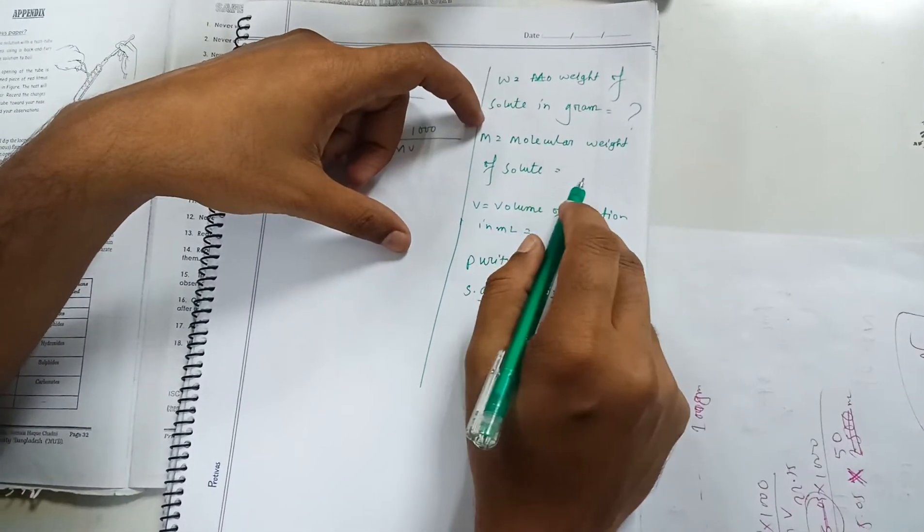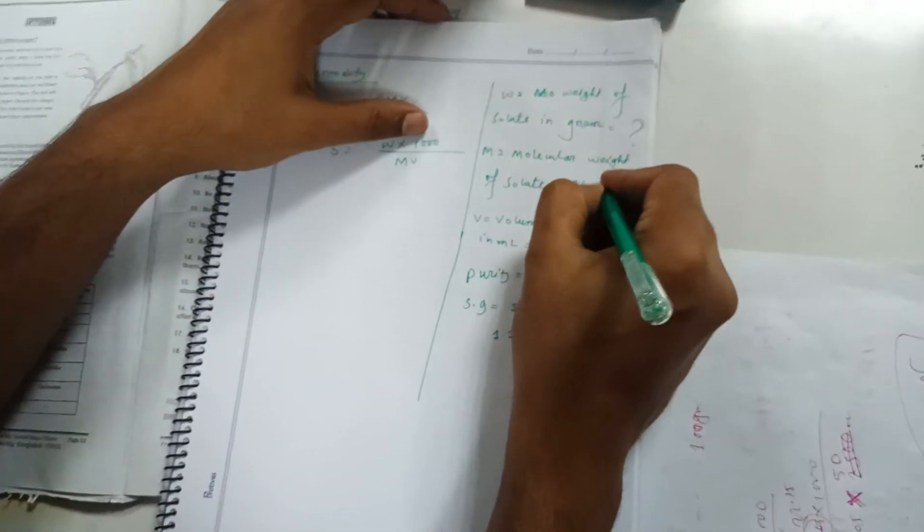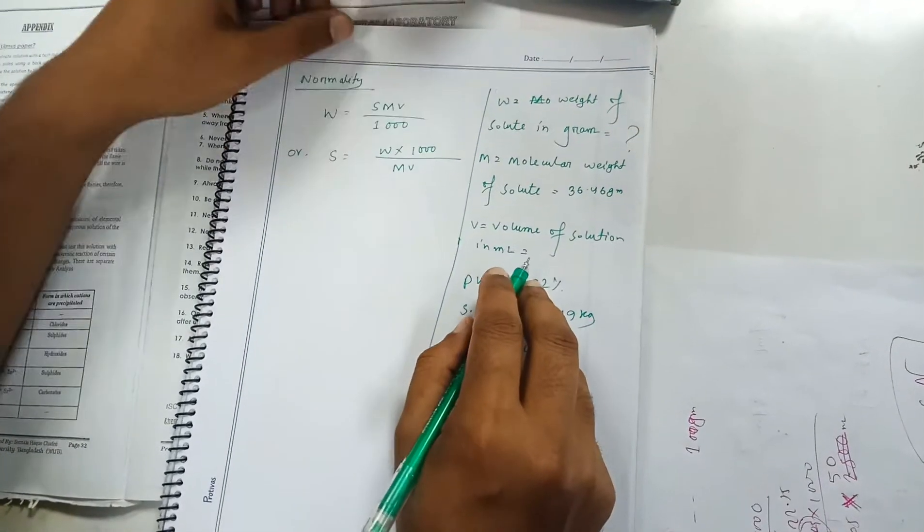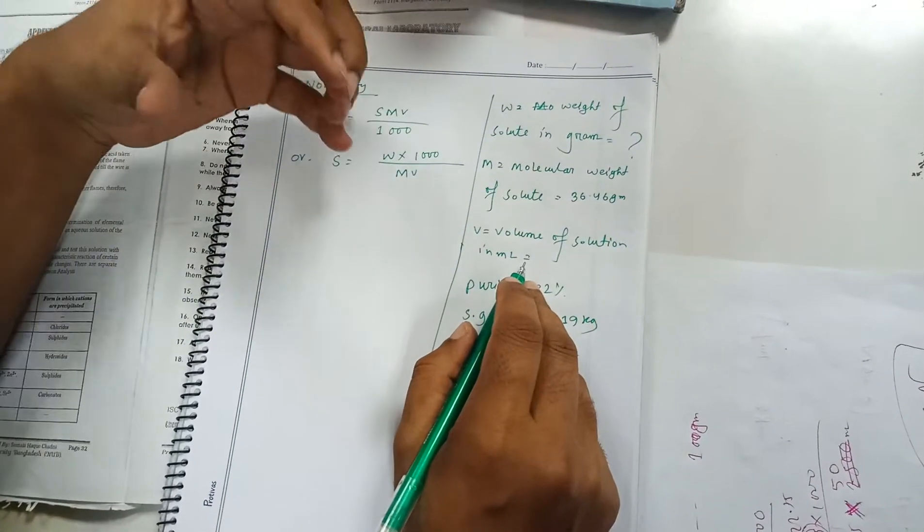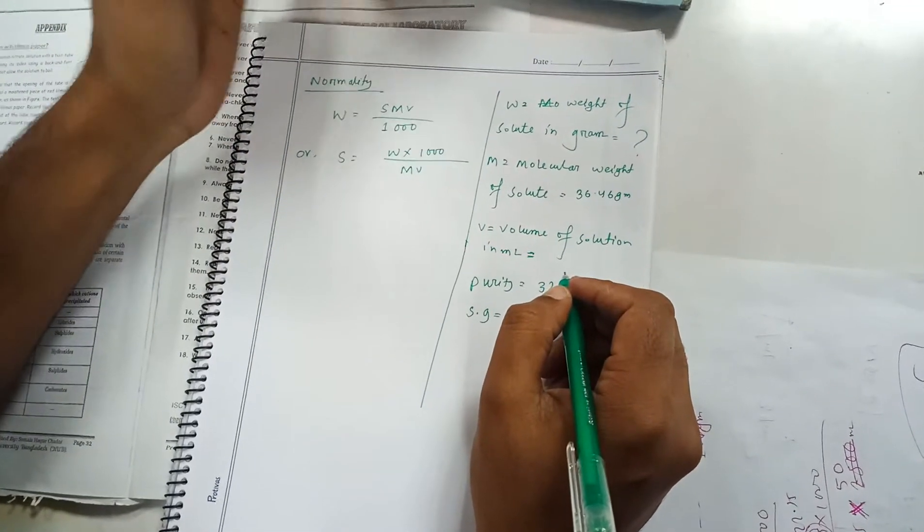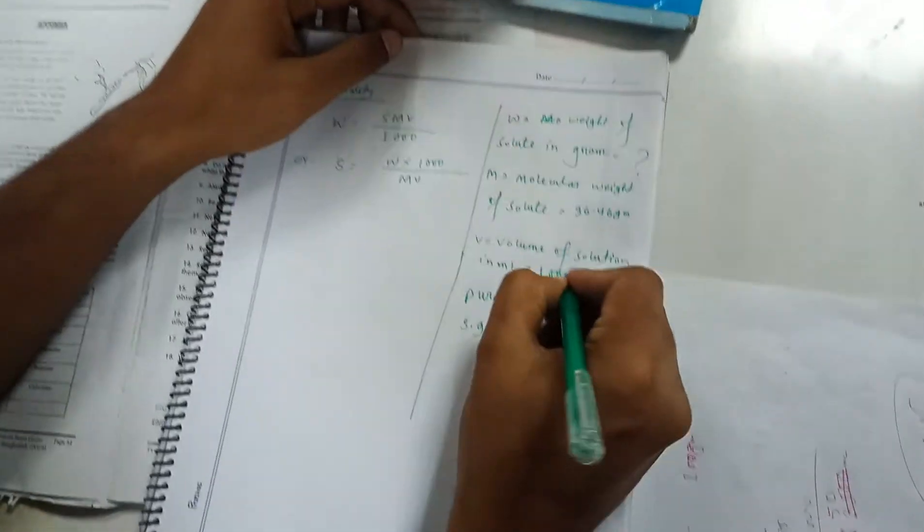M is already known. M is given as 36.46 grams. The volume will take 1000 ml in this particular container.